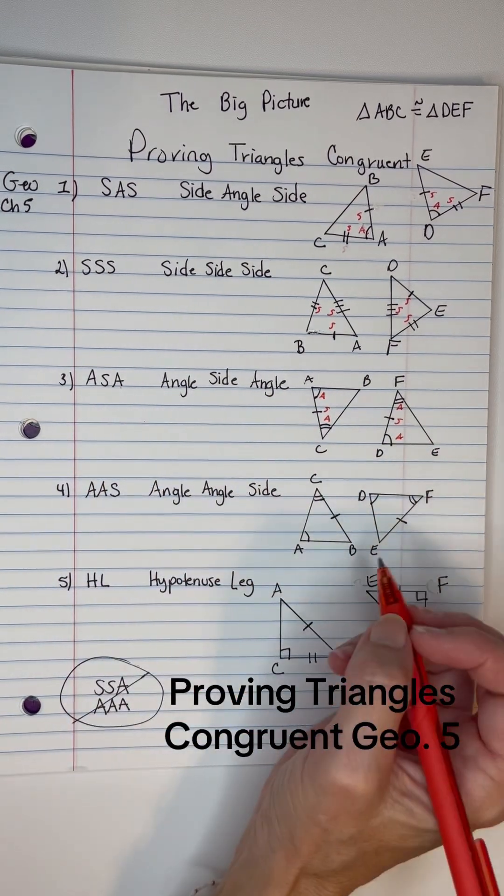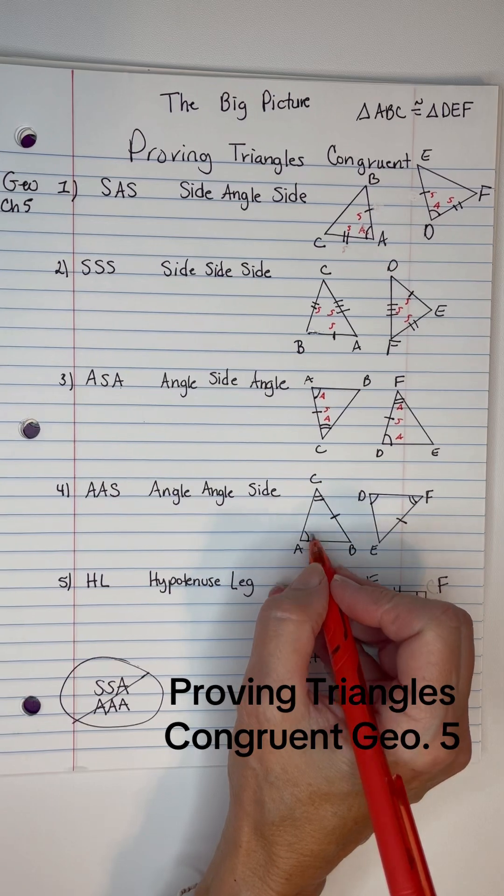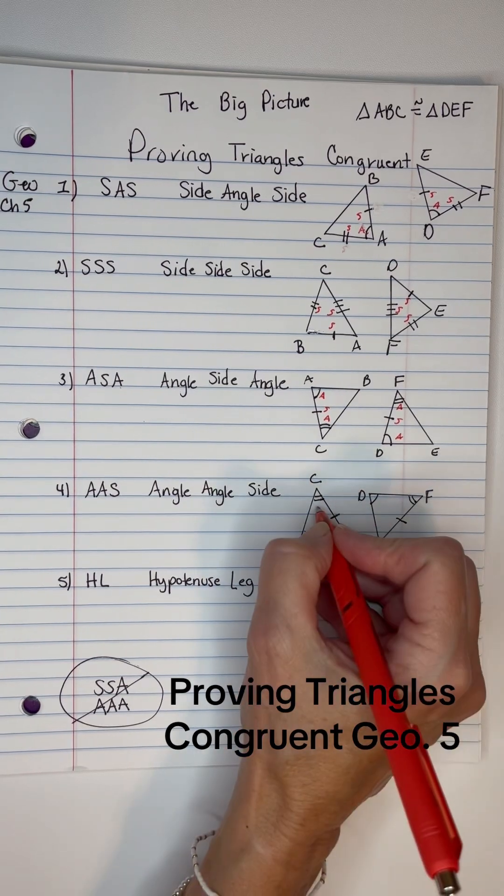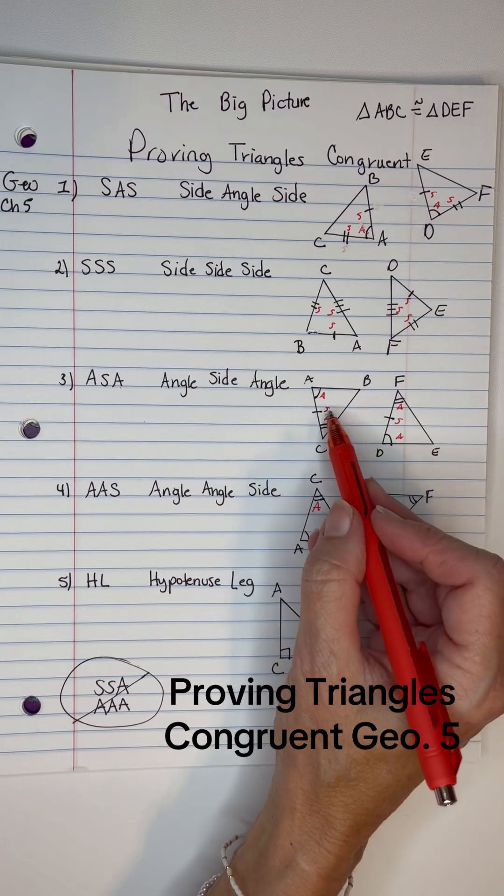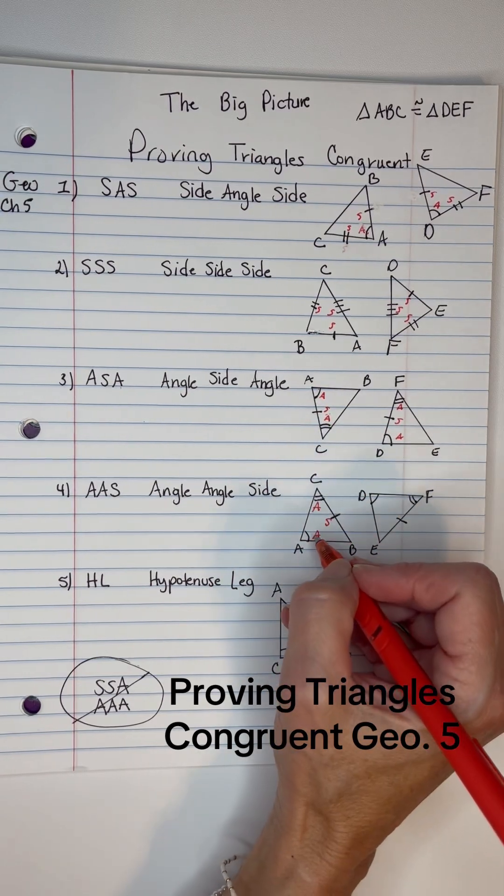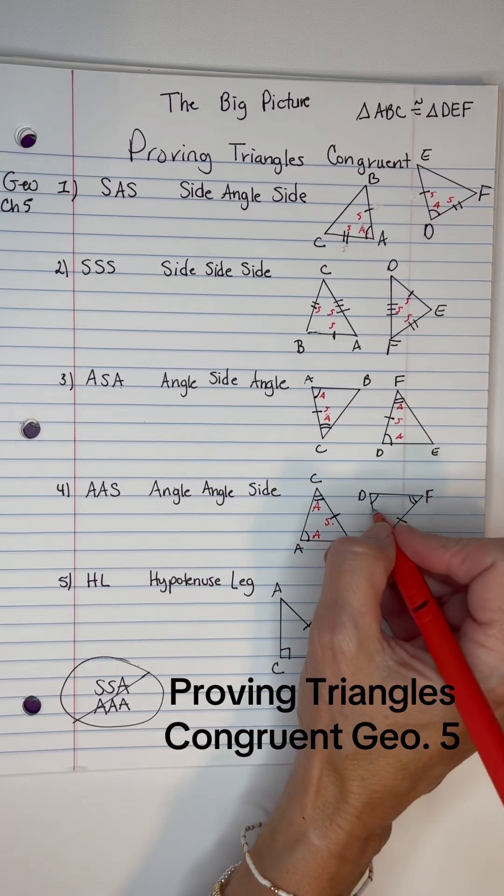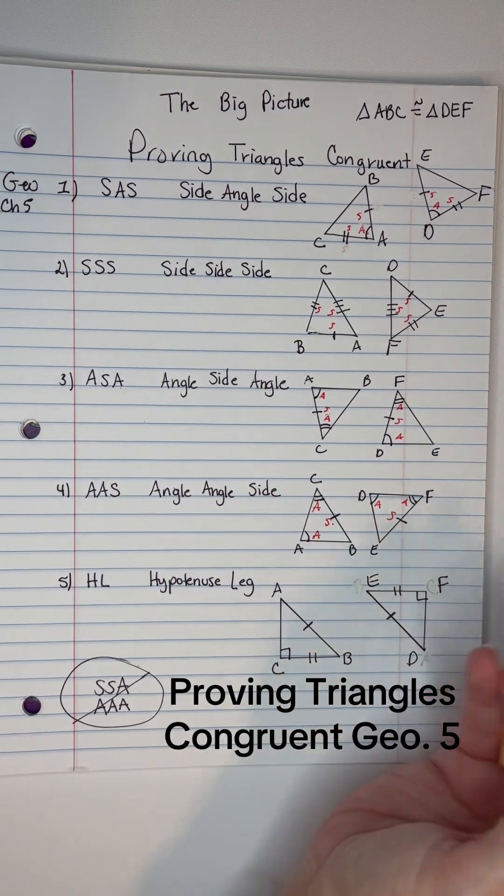And on this one, I have an angle here, an angle here, and then a side that's not between the angles, so it's not in the same place as this one. So, angle, angle, side, angle, angle, non-included side, this would be AAS.